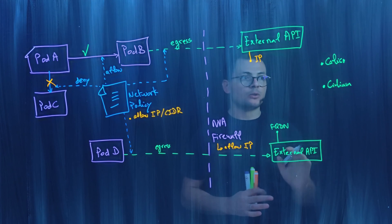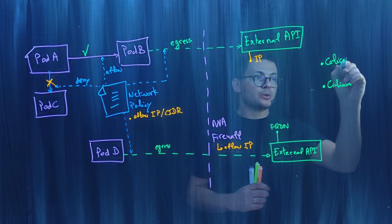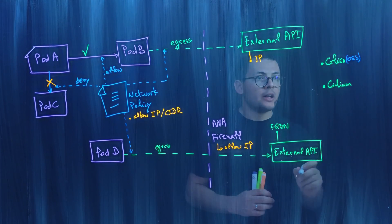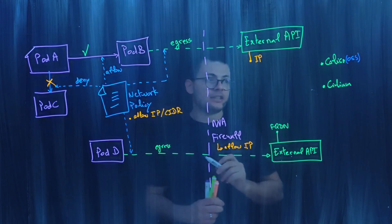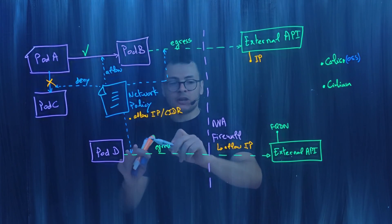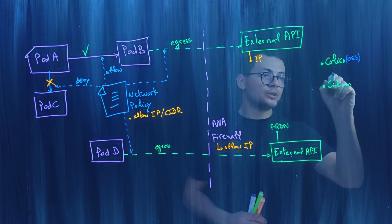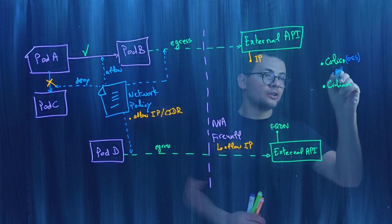Let's start first with Calico. Calico has the open-source version, OSS, that supports only filtering based on IP address. If you want to filter based on the FQDN, then you will need to use the enterprise version of Calico.